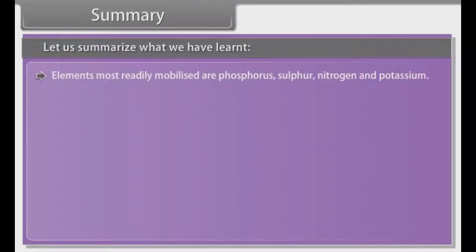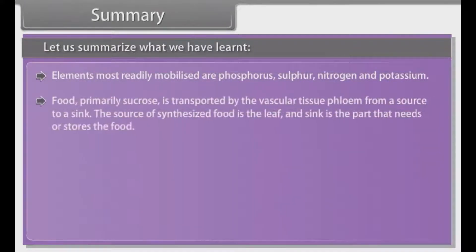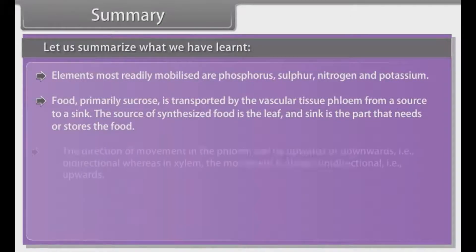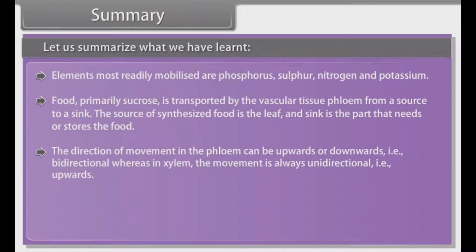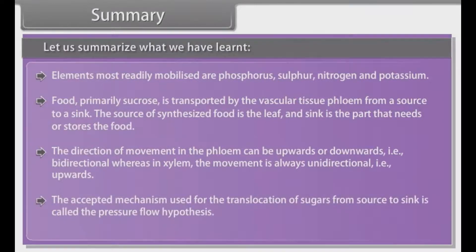Elements most readily mobilized are phosphorus, sulfur, nitrogen, and potassium. Food, primarily sucrose, is transported by the vascular tissue phloem from a source to a sink. The source of synthesized food is the leaf, and the sink is the part that needs or stores the food. The direction of movement in the phloem can be upwards or downwards, which is called bi-directional, whereas in xylem the movement is always unidirectional, which means upwards. The accepted mechanism used for the translocation of sugars from source to sink is called the pressure flow hypothesis.